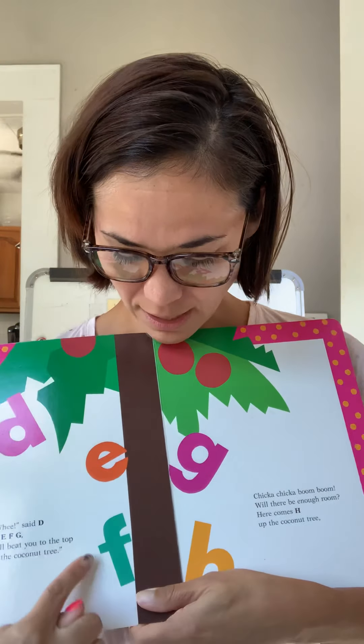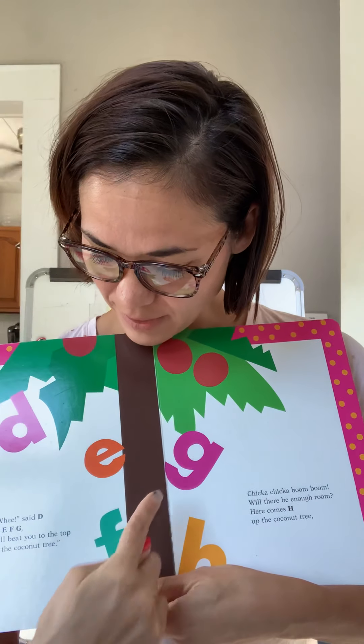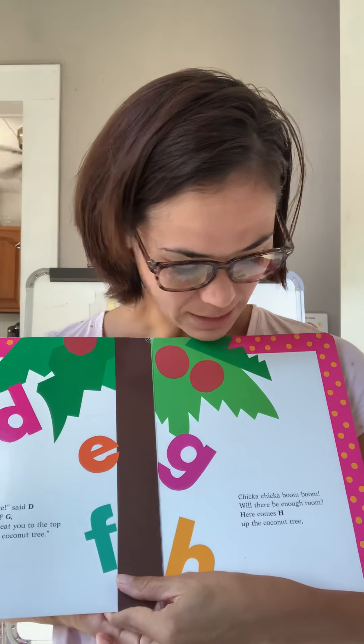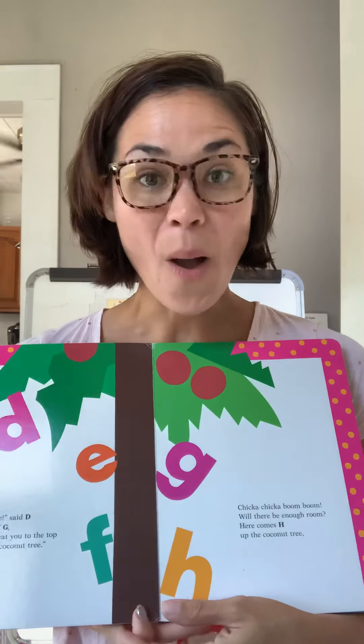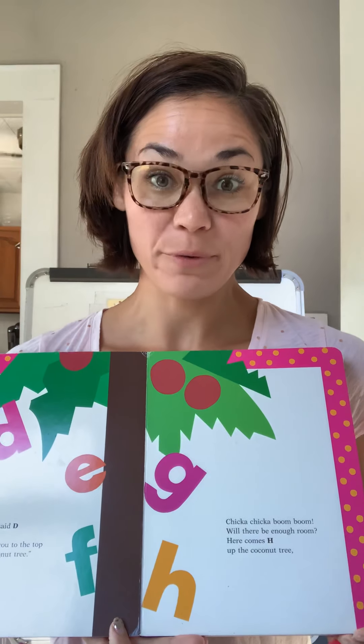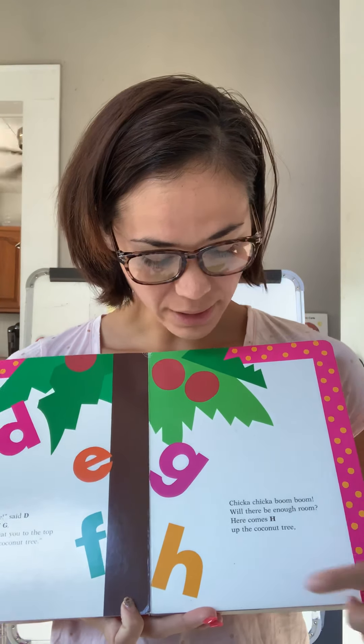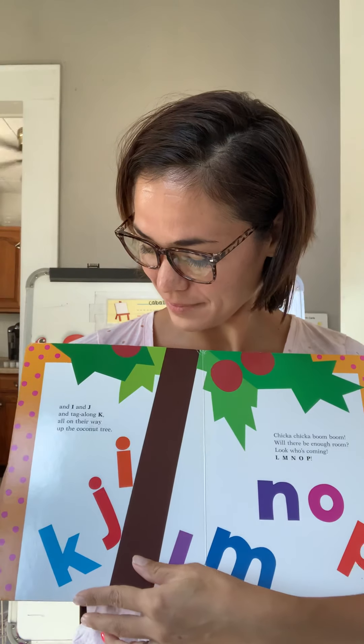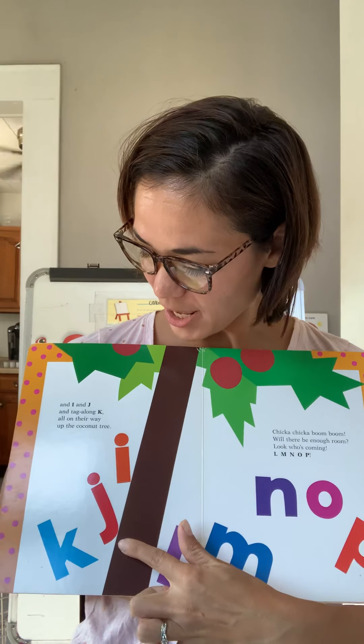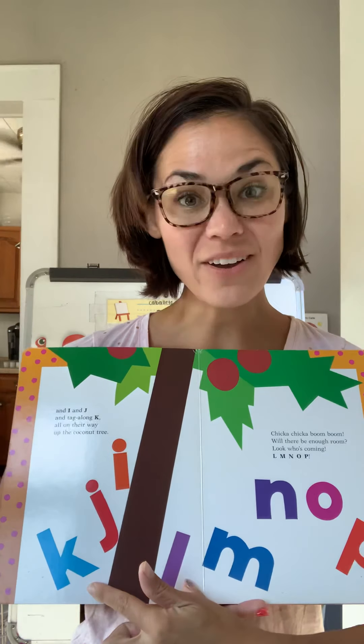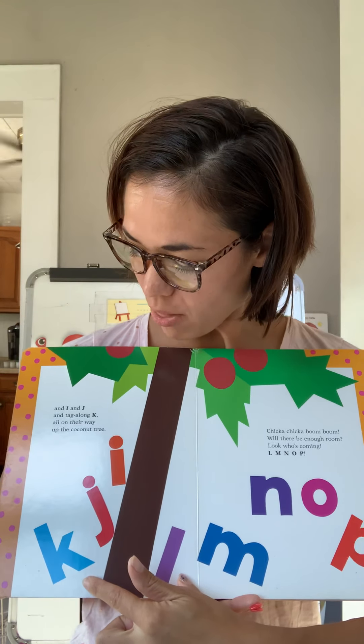Wee, said D to E, F, G. I'll beat you to the top of the coconut tree. Chicka Chicka Chicka Boom Boom. Will there be enough room? Here comes H up the coconut tree. And I, and J, and Tagalong K, all the way up their way, up the coconut tree.